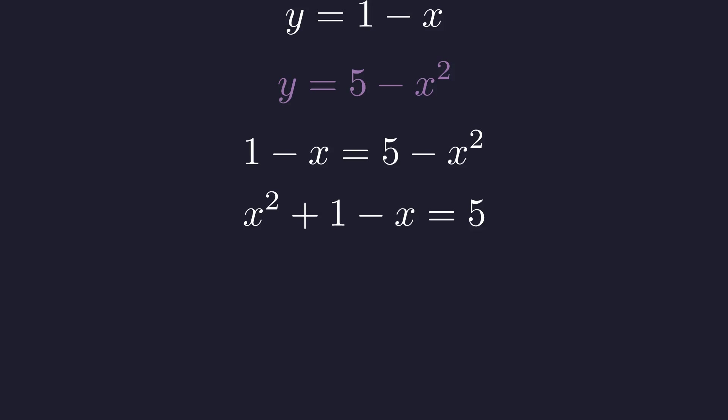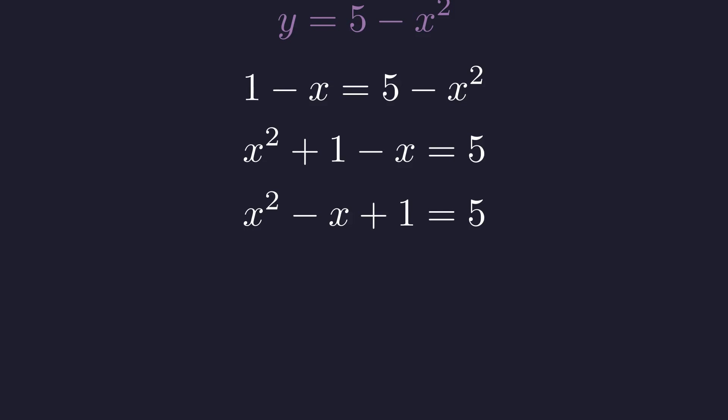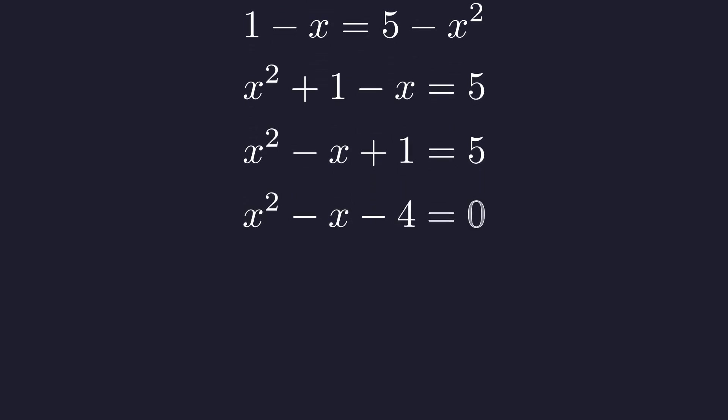First, let's add x squared to both sides of the equation. Now, we'll reorder the terms on the left to match the standard quadratic form. Finally, we subtract 5 from both sides to set the equation to 0. This quadratic does not factor with integers, so we must once again turn to the quadratic formula.